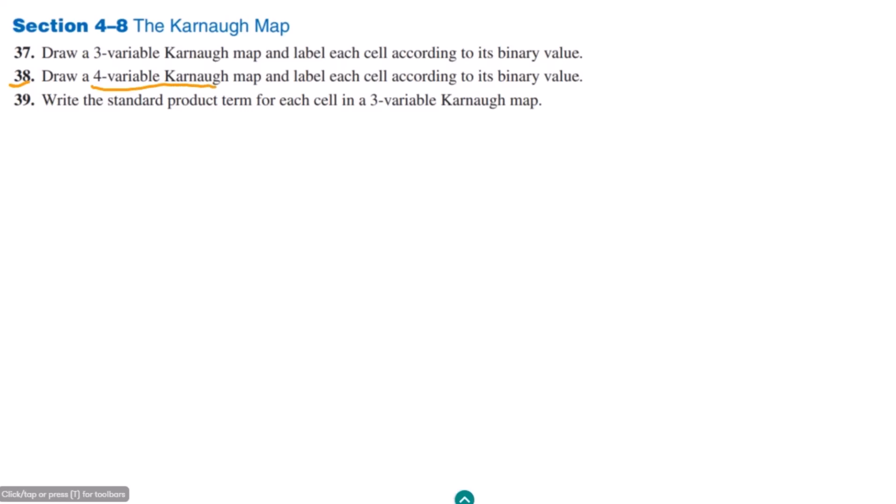Previously we have drawn a Karnaugh map which was of three variables, so now we have to draw a four-variable Karnaugh map and label each cell according to its binary value.